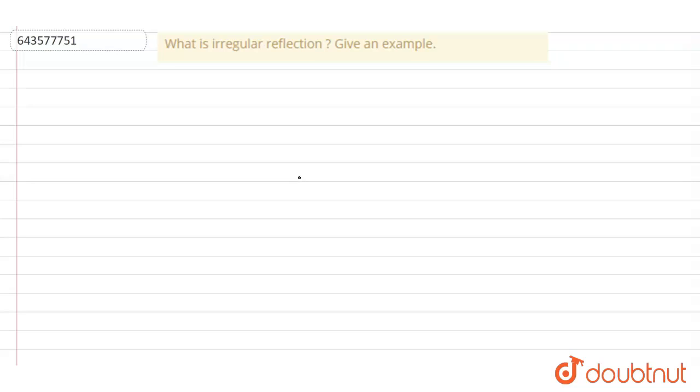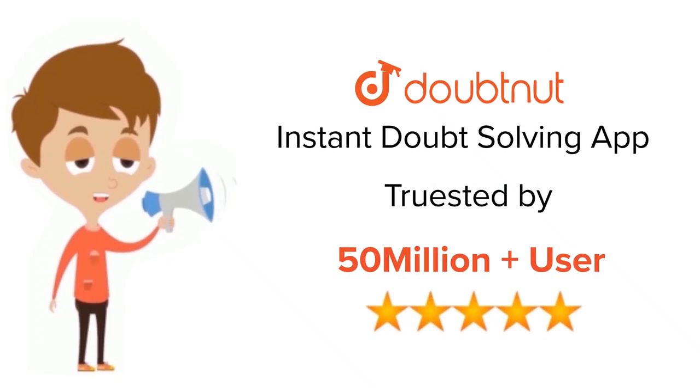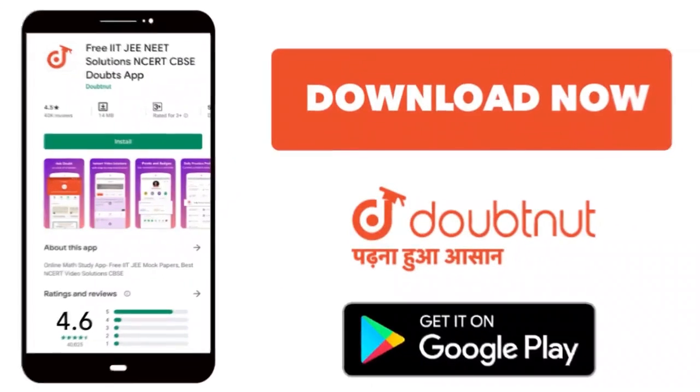Like, for an example, if this is an irregular surface, the reflection from this will be irregular and in different directions. So reflection from this is called irregular reflection. Thank you. For class 6-12, IIT-JEE, and NEET level, trusted by more than 5 crore students. Download Doubtnet app today.